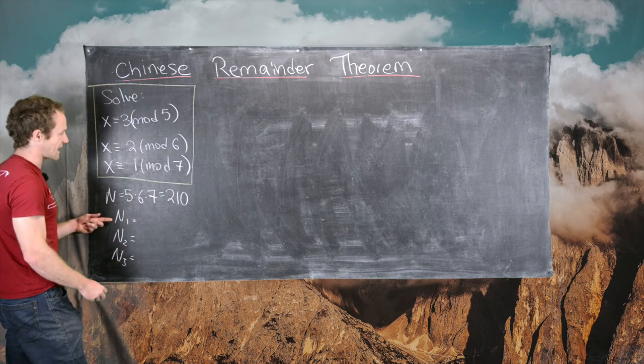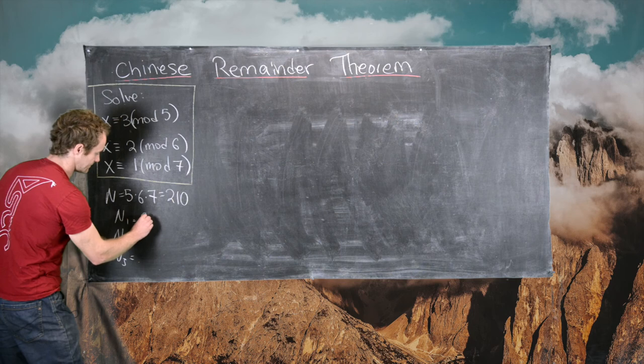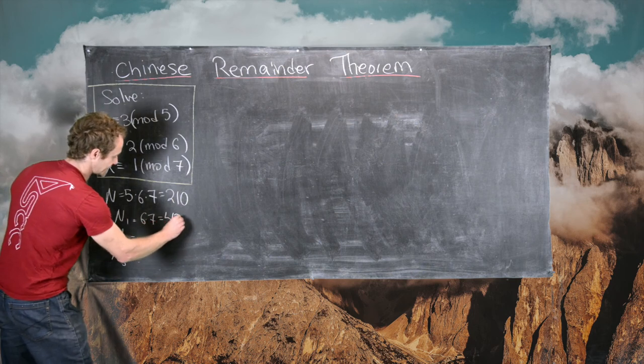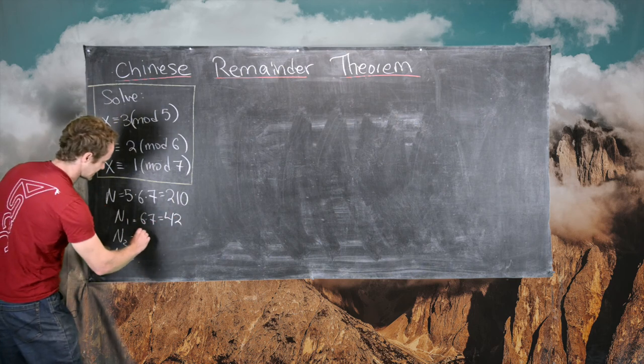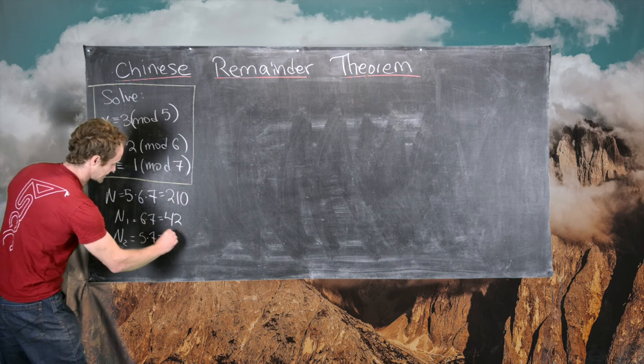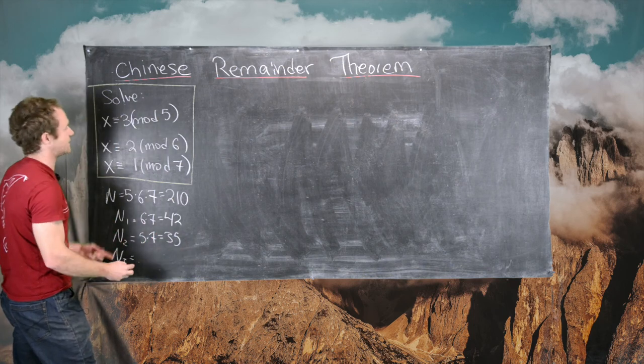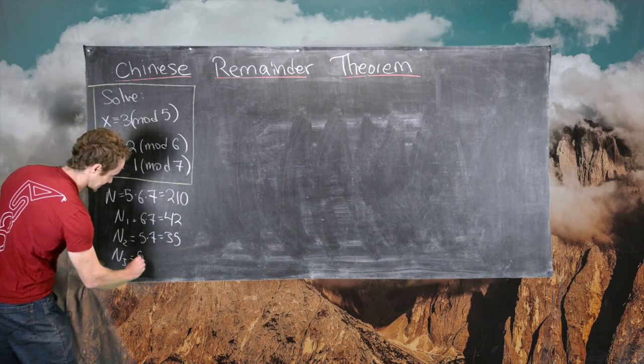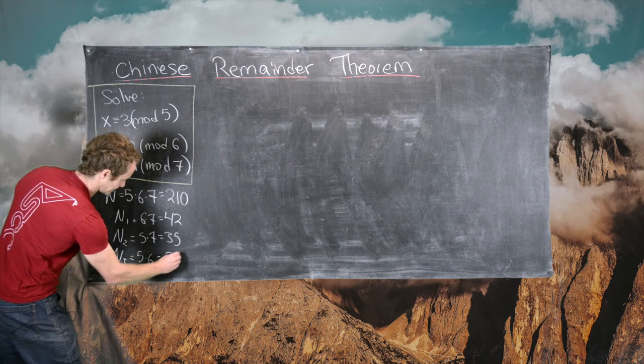So here we have N1 is 6 times 7, so that's 42. N2 is 5 times 7, so that's 35. And N3 is 5 times 6, so that's 30.